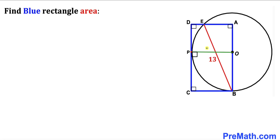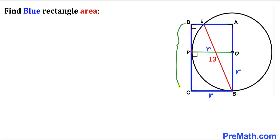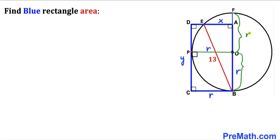Let's call the radius of the circle lowercase r. Then BC equals r, and OB also equals r. We'll call side length CD of the rectangle y units, and segment AE equals x. Since OB is radius r and OF is also radius r, segment OA turns out to be y minus r.